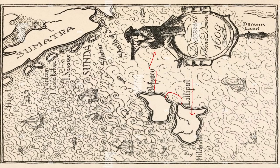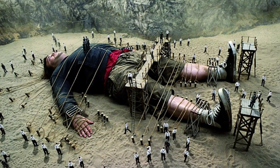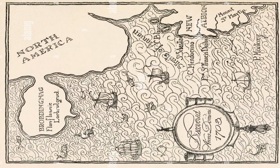Gulliver manages to escape to the island of Blefuscu. Fortunately, a human-sized boat washes ashore there. Gulliver rows to nearby Australia and finds a boat to take him back to England. He sets sail and is picked up by a merchant ship. Upon his return home, Gulliver shows off the Lilliputian-sized livestock he has smuggled home in his pockets and makes a solid profit.